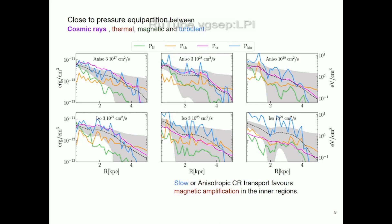One interesting result: we expect a galaxy to have rough equipartition among pressure components. Here I show radial profiles of magnetic, thermal, cosmic ray, and kinetic/turbulent pressures, and they are more or less in the same order of magnitude — except for two cases where the magnetic pressure is notably low, almost an order of magnitude lower, particularly in the center. This is due to a plateau or halt in the magnetic amplification.